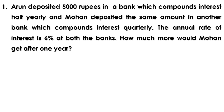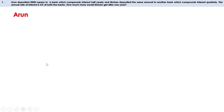There are two persons, Aidan and Mohan. Both deposit 5,000 rupees in different banks. The rate of interest is 6% at both banks, and both deposit for one year. For Aidan it is half yearly compounding, but for Mohan it is quarterly compounding. We have to find how much more Mohan gets after one year. Let us take the case of Aidan first. He deposits 5,000 rupees, so P is 5,000. Annual rate of interest is 6%.